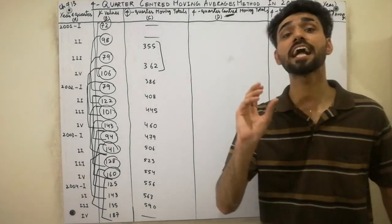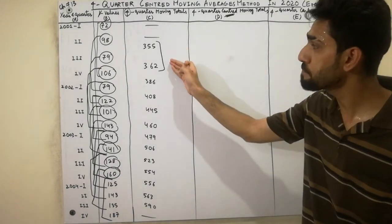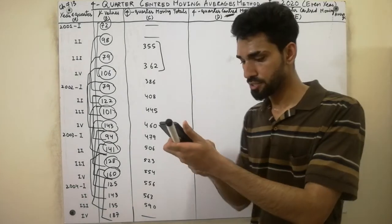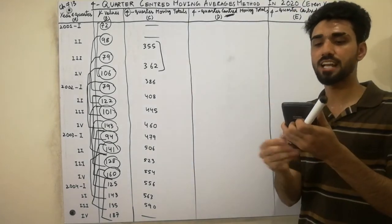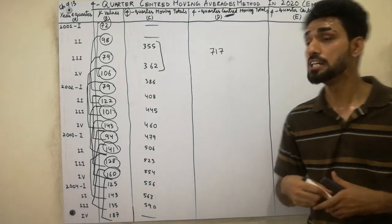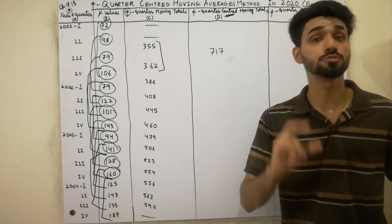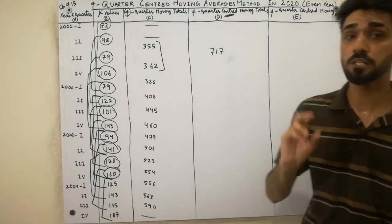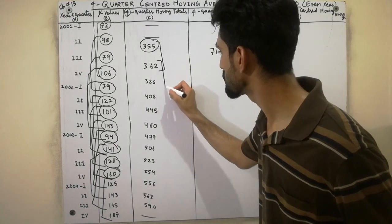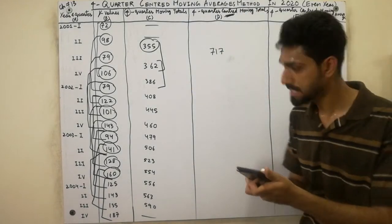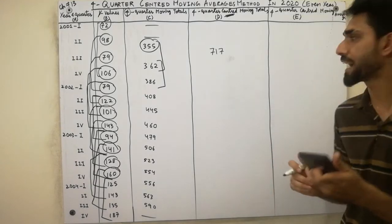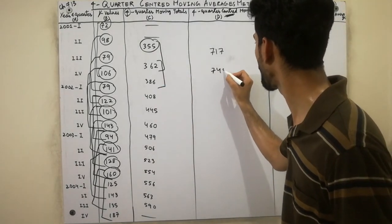We add the first two centered values: 355 plus 362. We get 717. We write that in the centered column. Then we leave that pair and add the next two: 362 plus 386. We get 748, written in the center. Then the next two: 386 plus 408. We get 794, written in the center.